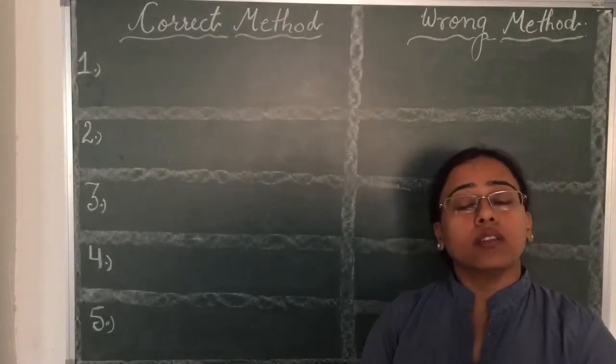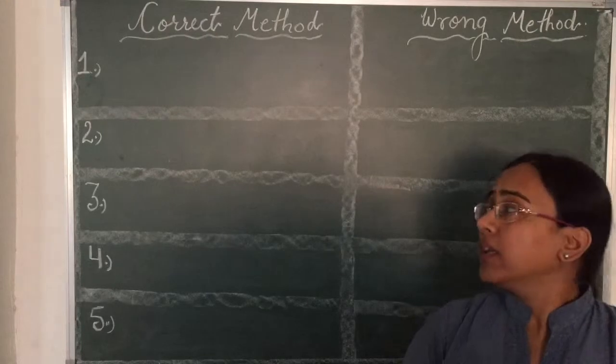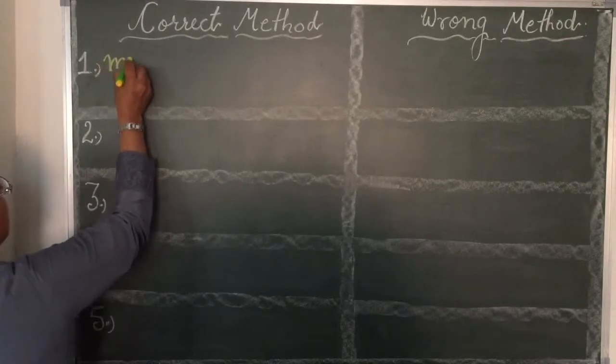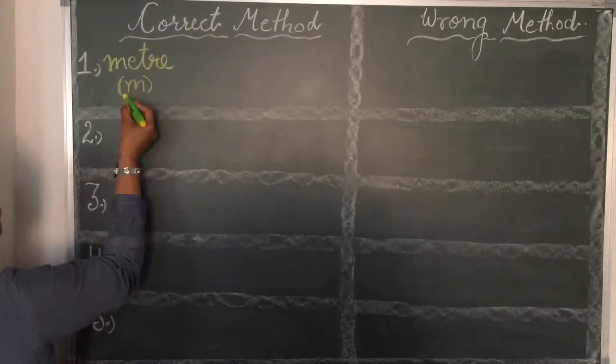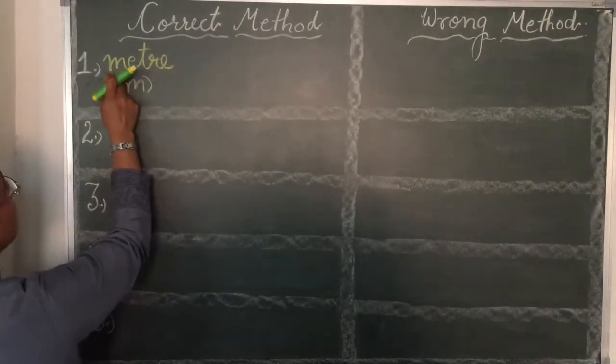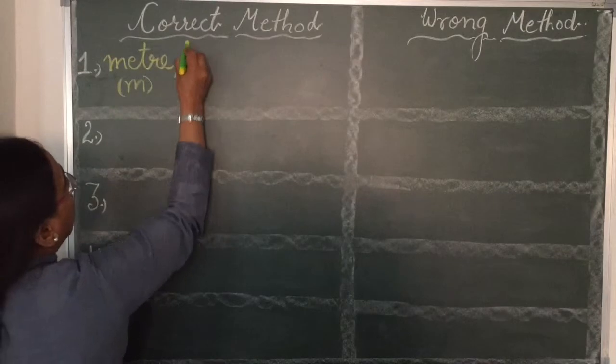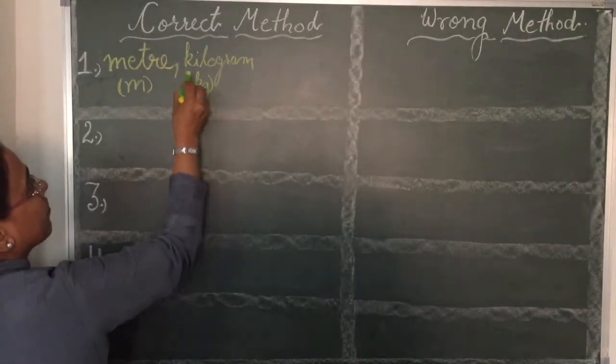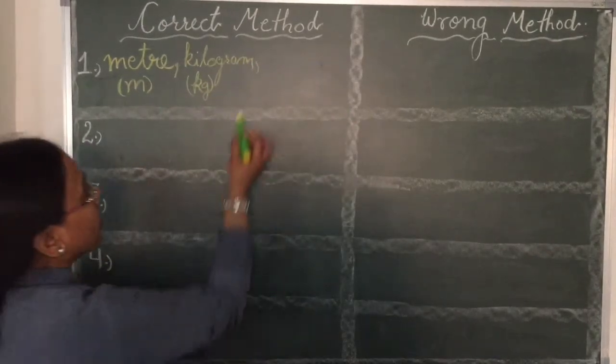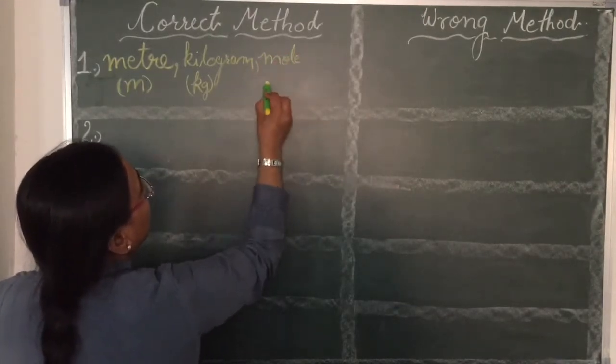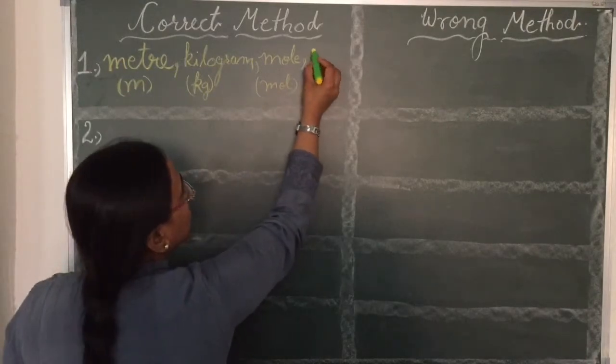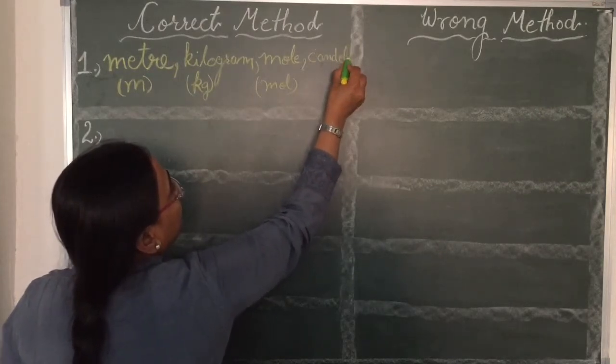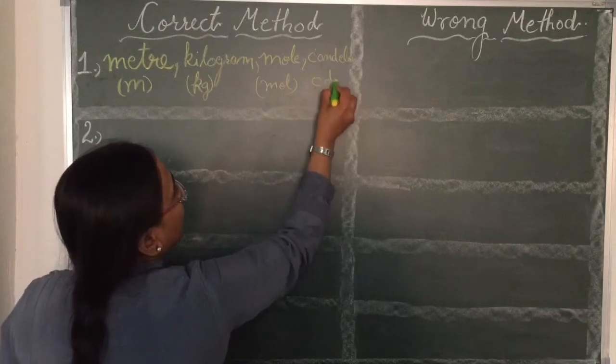Number 1 is if the symbol is not named after the name of a scientist, then it should be started with the small letter. For example, meter, its symbol is small m. And if you are writing it in full, it should be started with the small letter m. Now kilogram, symbol is kg, second candela, mole, unit of amount of substance, and candela, unit to measure the luminous intensity, denoted by small c, small d.